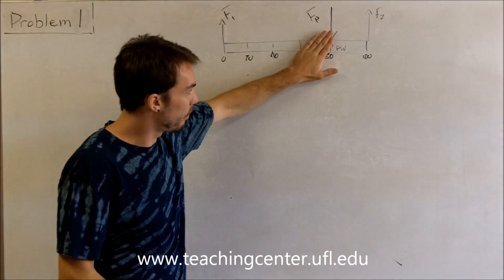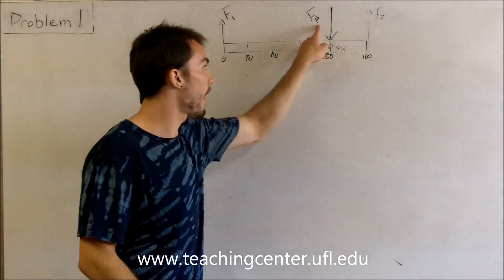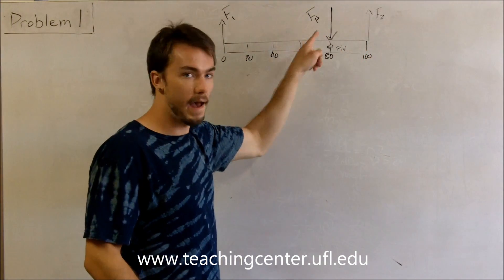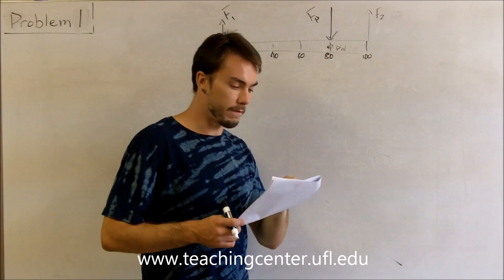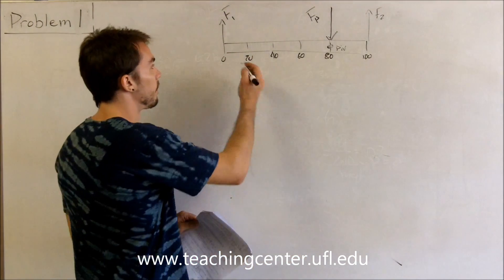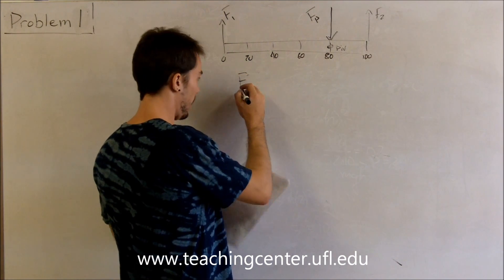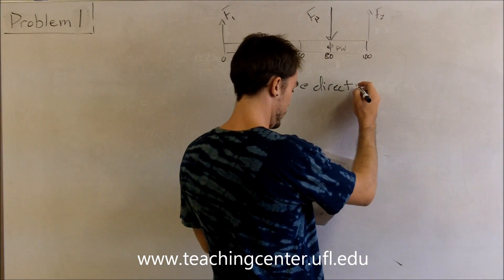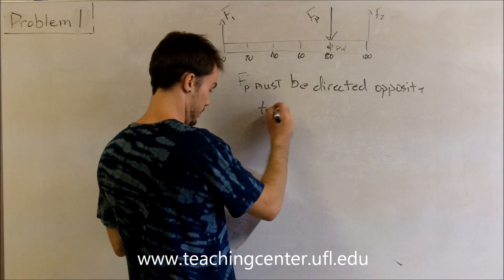To recap: because of the pivot point's location, F2 has to point in the same direction as F1. If F2 pointed down, the stick would keep rotating regardless of the pivot. Once we know F2 points up, and we have two forces pointing up, for static equilibrium the pivot force has to point down to counteract F1 and F2. The first part of the question asks the direction of the pivot force relative to F1 — the pivot must be directed opposite to F1.